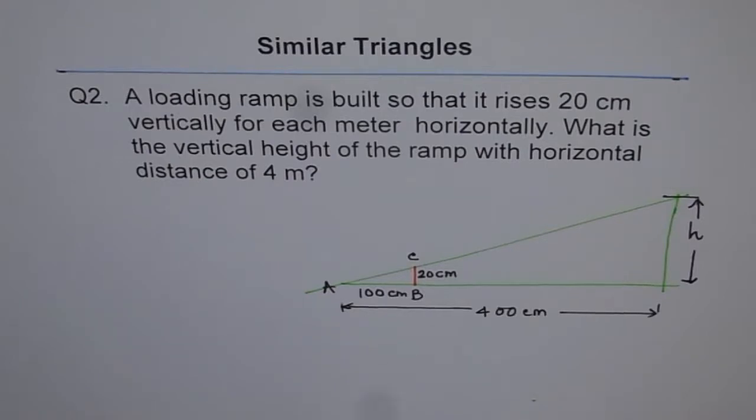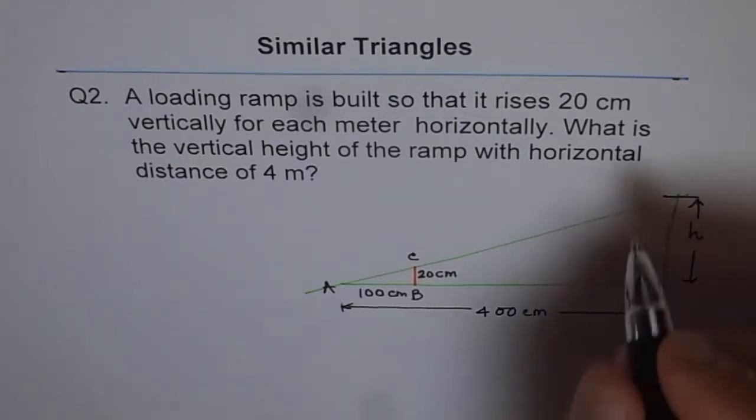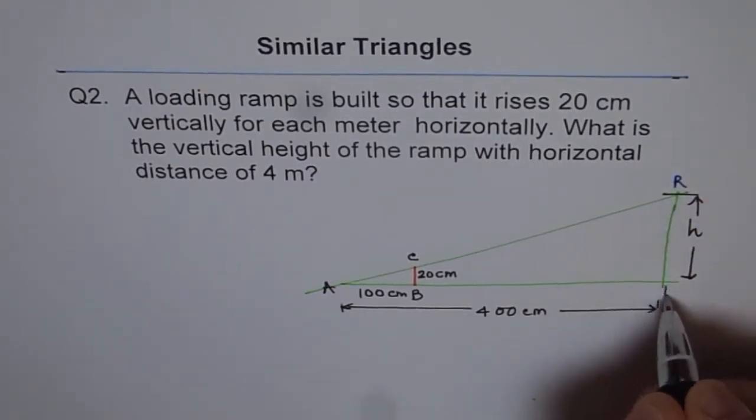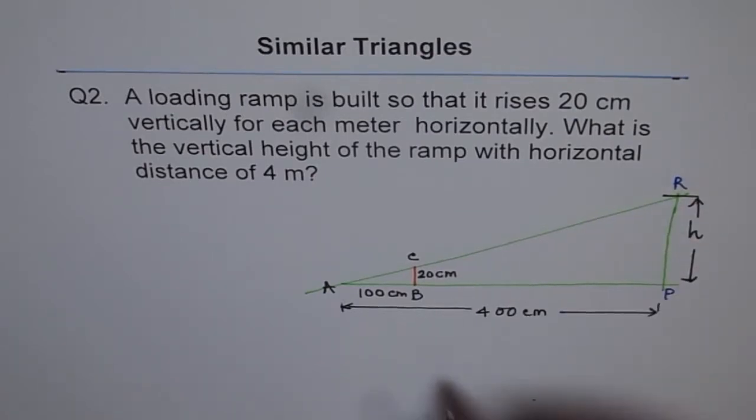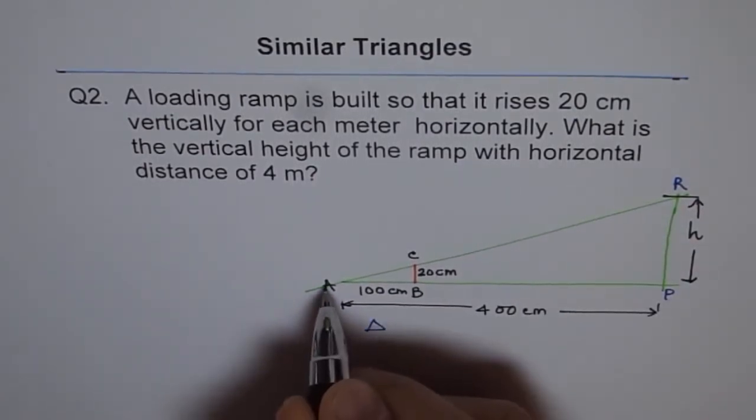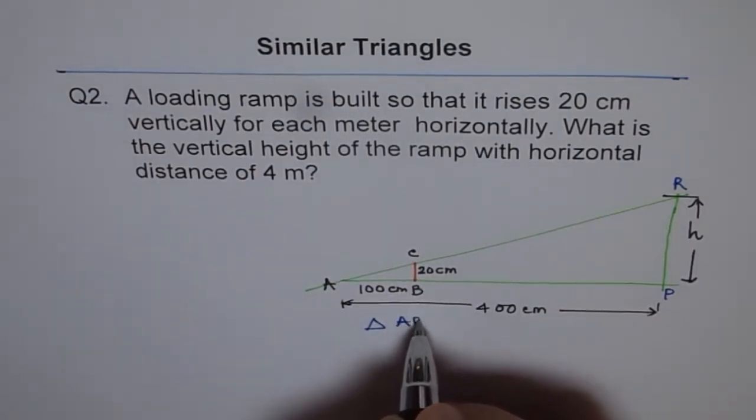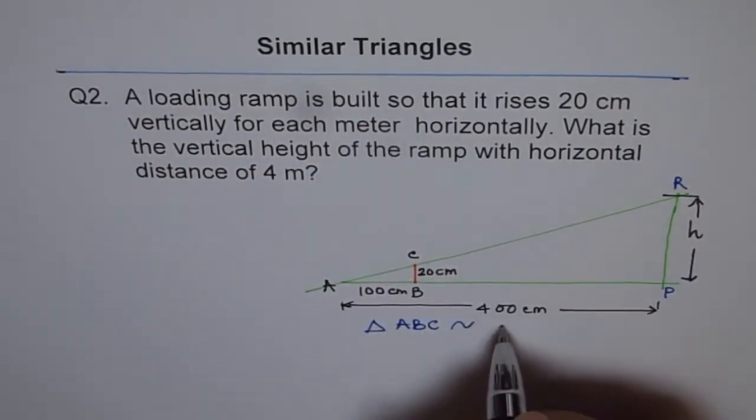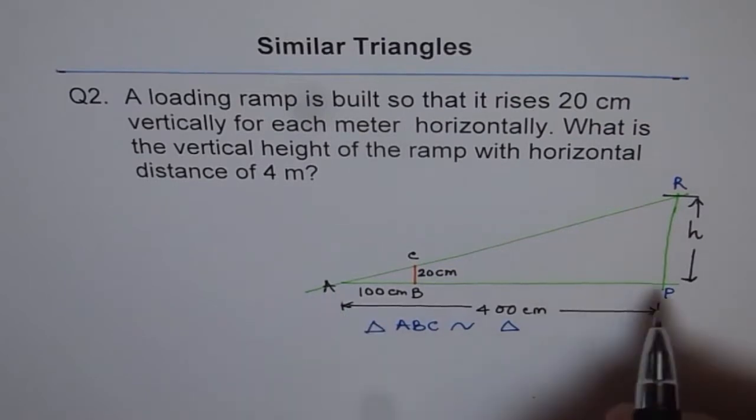Now we will use the concept of similar triangles. Let's say this point be R, P. The height of the ramp. So the triangle ABC is similar to triangle APR.